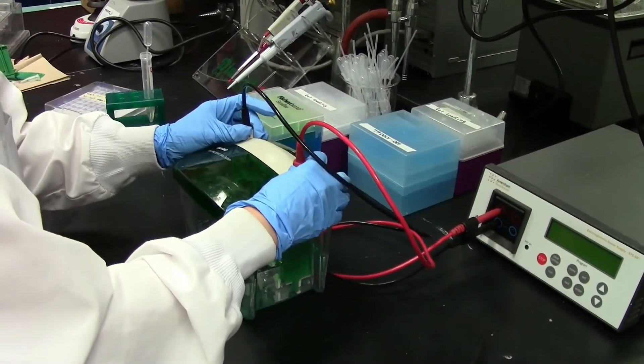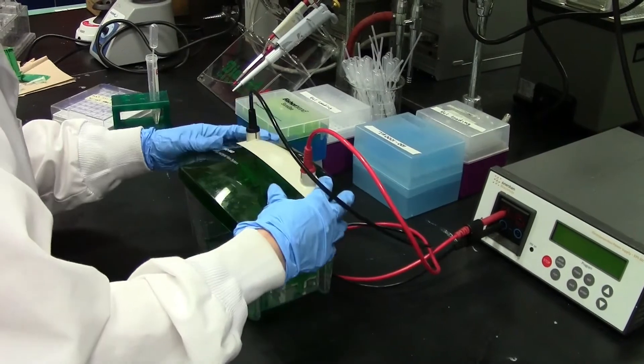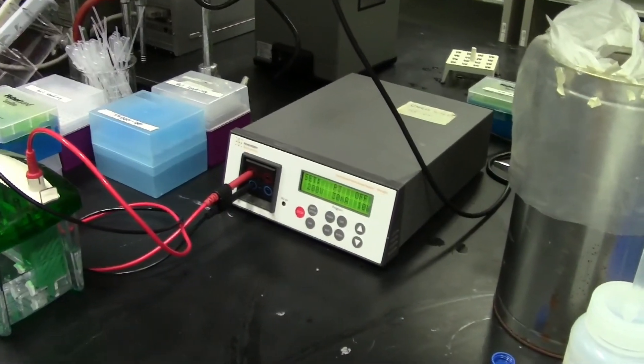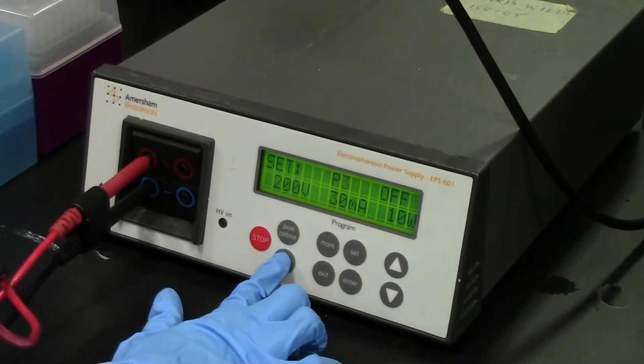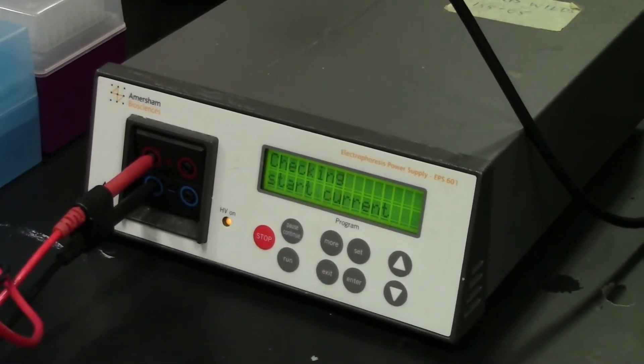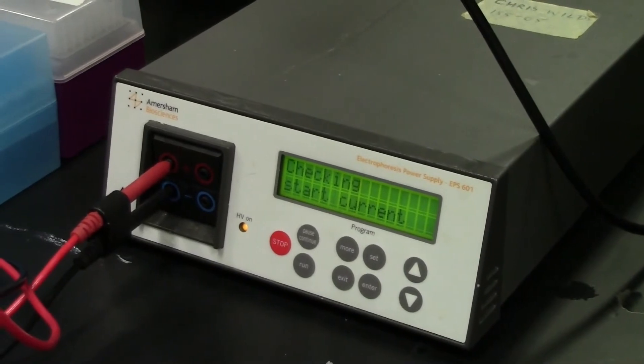Now you are ready to turn on the power supply to apply an electric field. Place the lid on the buffer tank ensuring that the black and red electrodes are aligned appropriately. You can now turn on the electrophoresis power supply. Set it to 200 volts and press run.